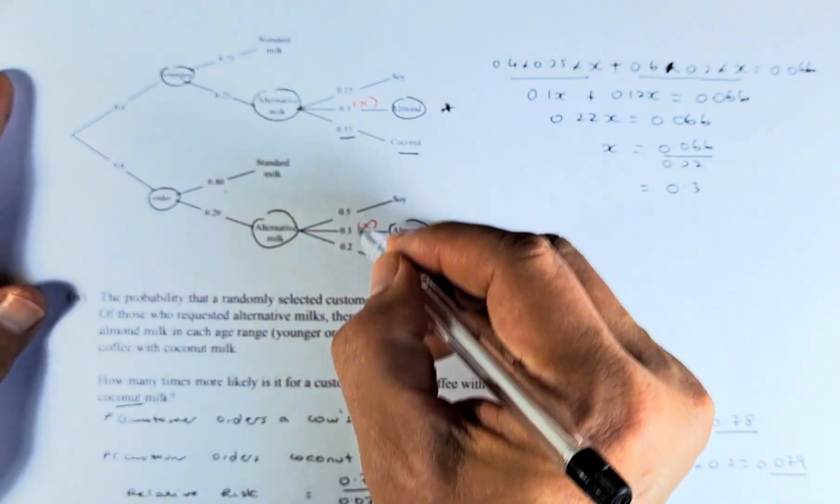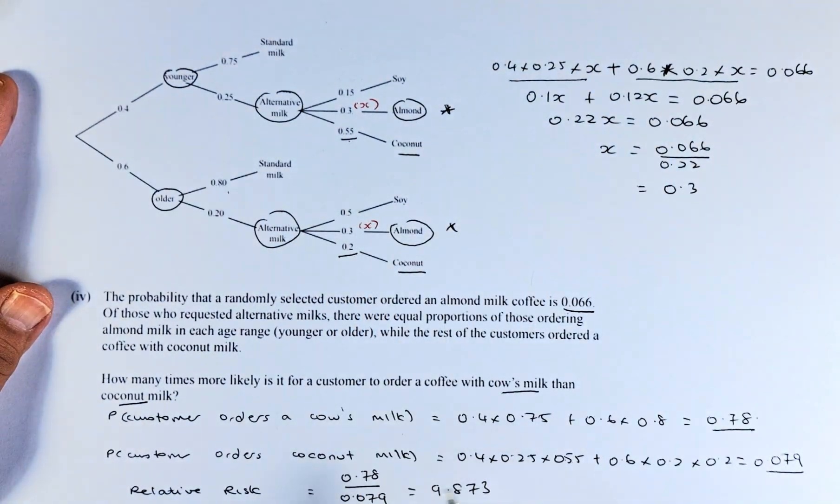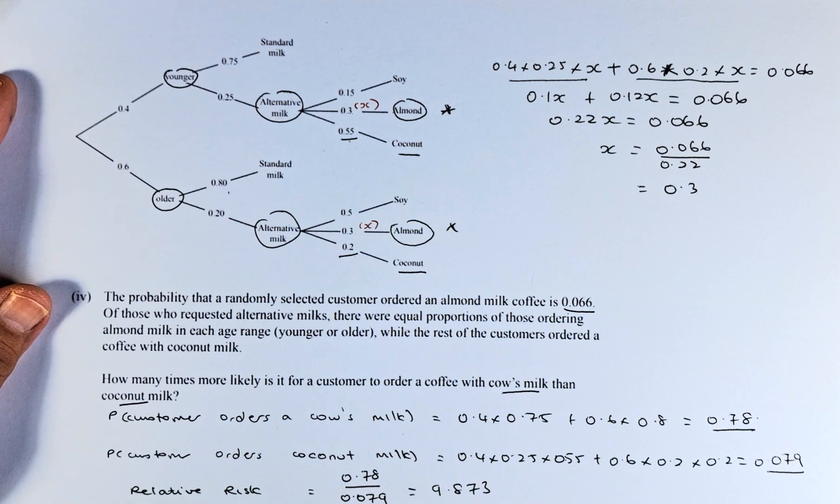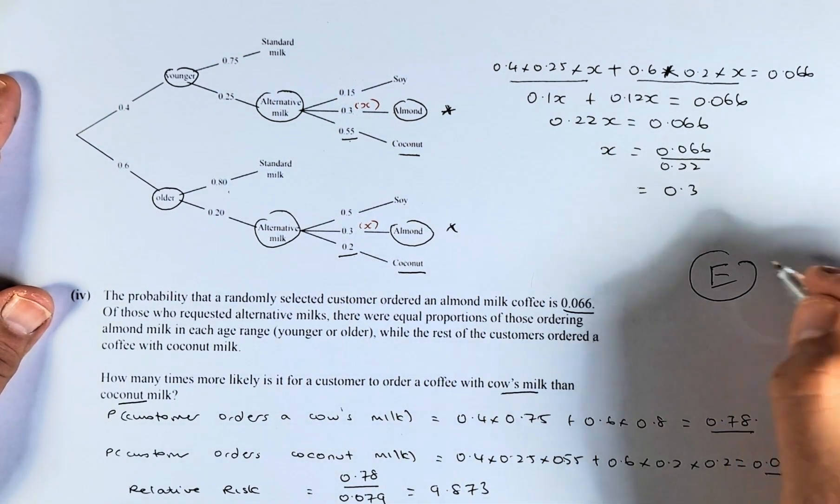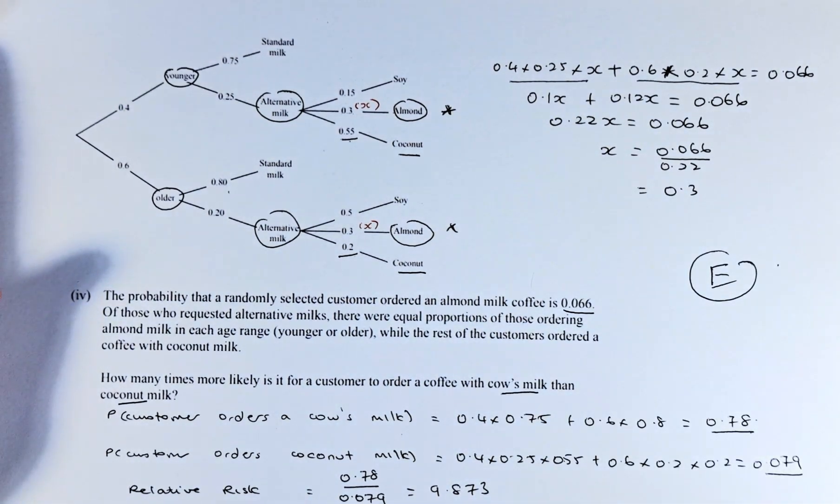And then you calculate the relative risk between those who order the cow's milk over those who order the coconut milk. And the percentage-wise or how many times it's going to be 9.9 times. If you can answer that, that's excellent in this paper. And I hope to see you in the next one which is question 2B.